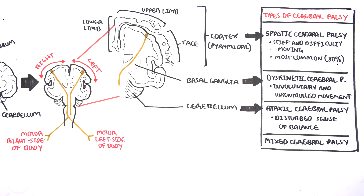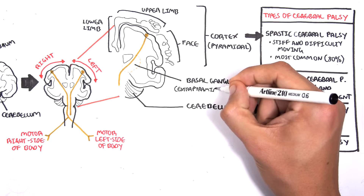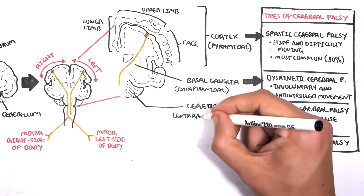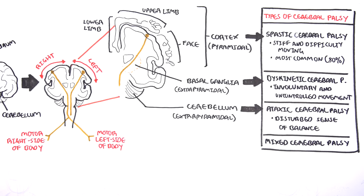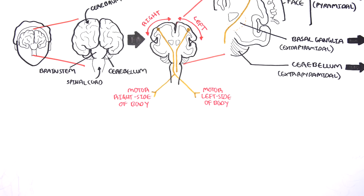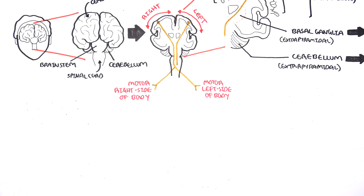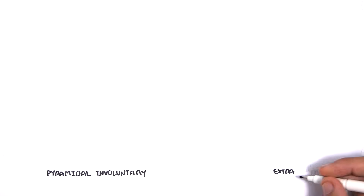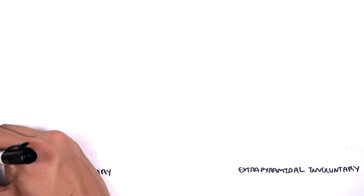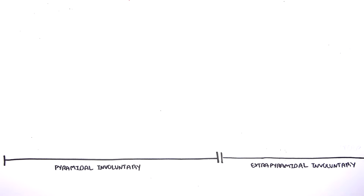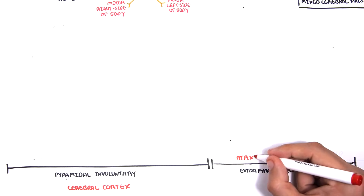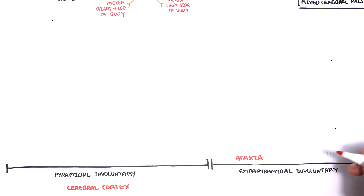While the cortex is part of the pyramidal group, the basal ganglia and cerebellum are not part of conscious control — they are the extrapyramidal group. Pyramidal cerebral palsy involves voluntary motor neurons, whereas extrapyramidal cerebral palsy involves involuntary motor neurons. Problems in the cerebral cortex cause spastic cerebral palsy as part of the pyramidal voluntary group, while extrapyramidal cerebral palsy affects the cerebellum and/or basal ganglia, and is called ataxic, dyskinetic, or athetoid cerebral palsy.